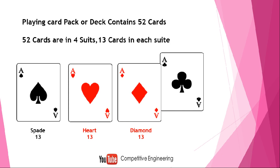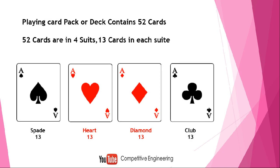The third suit is Diamond. Diamond is also in red color, it looks like a diamond, and the total number of diamond cards is 13. The fourth and last suit is called Club, also 13 in number.